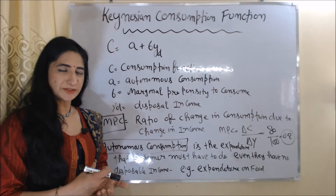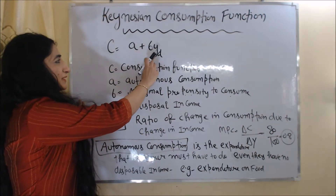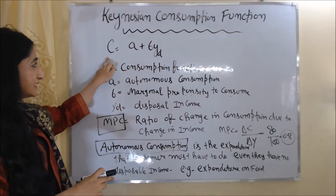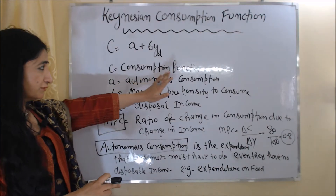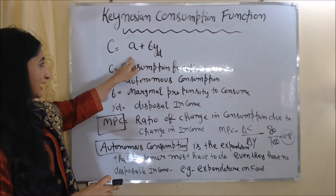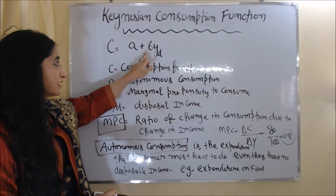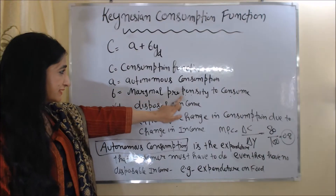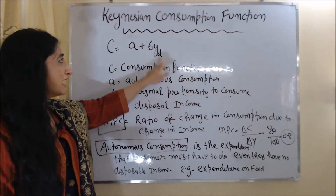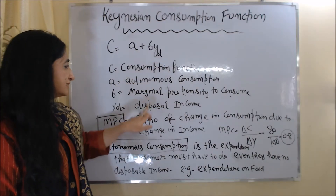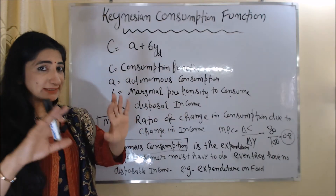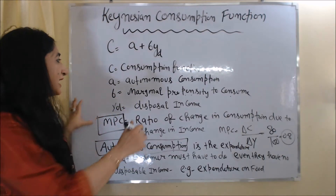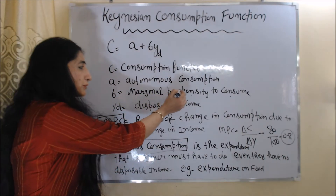The formula of the Keynesian consumption function is C = a + bYd. Here, C is the consumption function, a is autonomous consumption, b is the marginal propensity to consume, and Yd is disposable income. We have already discussed disposable income, and now we will discuss marginal propensity to consume.